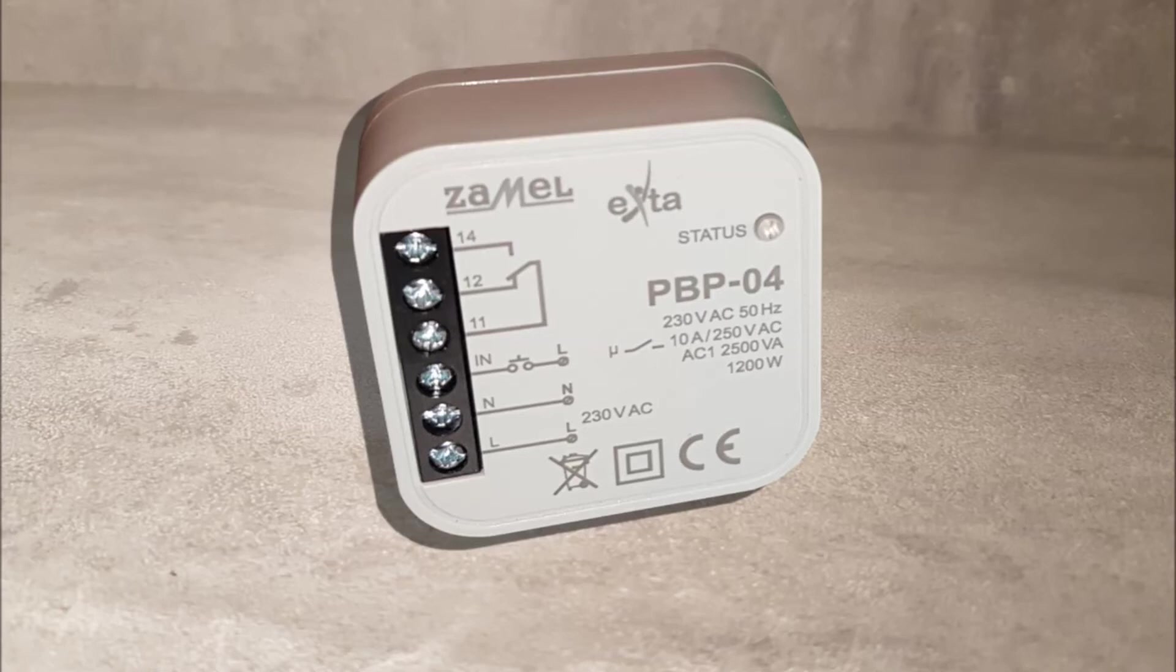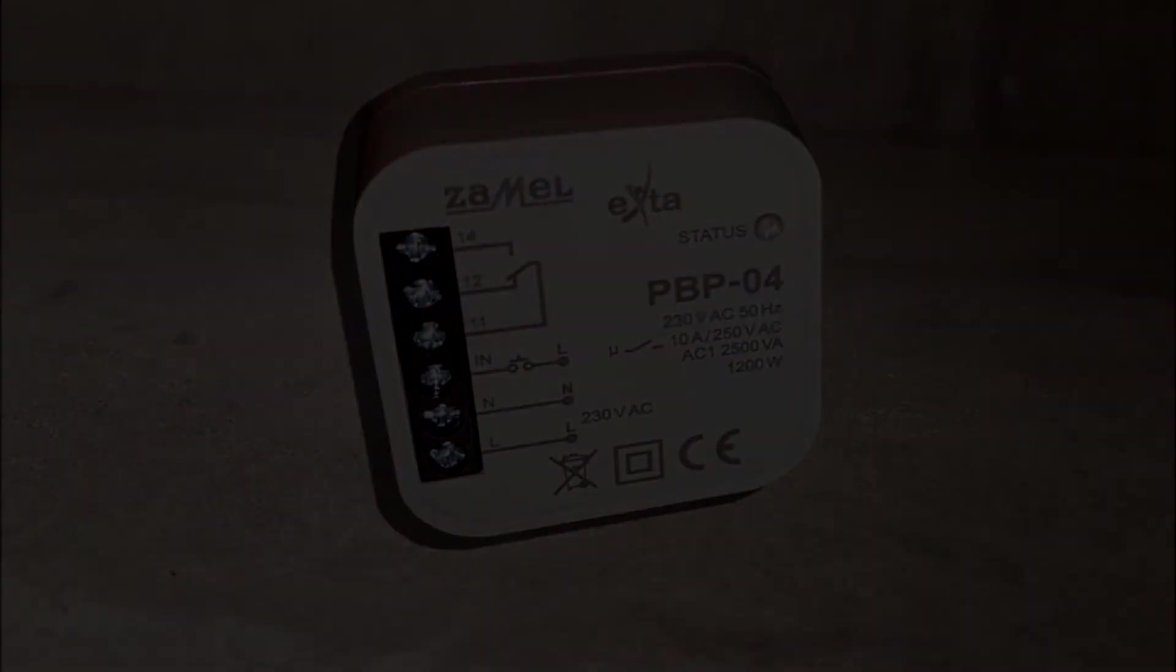Features include: receiver activation indicator with red LED, triggering the circuit only from the L line, works with single-pole illuminated push buttons in a two-wire control installation, relay output voltage-free NO/NC type with a load capacity of 10A, and installation in 60mm round boxes.